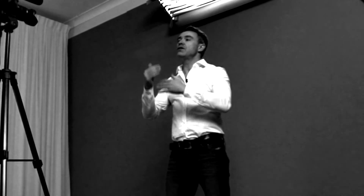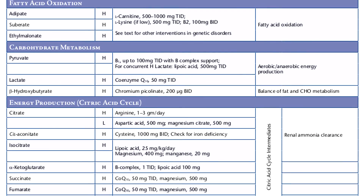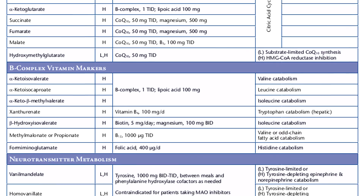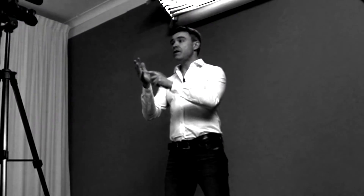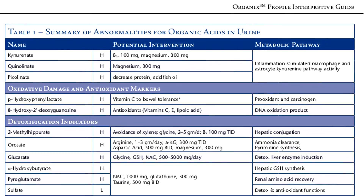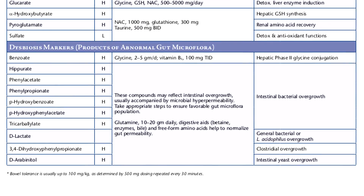So in a nutshell, the organic acids test is giving you information about seven or eight different categories of your metabolism: fat metabolism, carbohydrate metabolism, energy production, B vitamin status, neurotransmitter status and metabolism, inflammation, oxidative stress, liver function and detoxification, and of course the digestive markers as well.